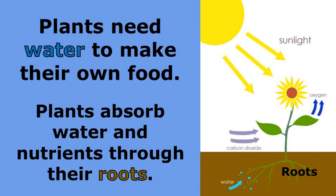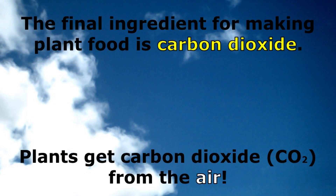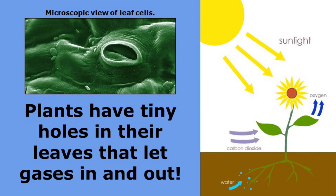Plants need water to make their own food. Plants absorb water and nutrients through their roots. The final ingredient for making plant food is carbon dioxide. Plants get carbon dioxide, or CO2, from the air. Plants have tiny holes in their leaves, called stomata, that let gases in and out.